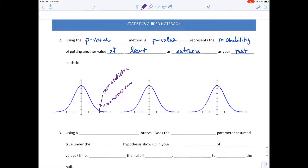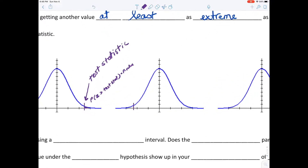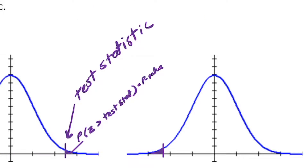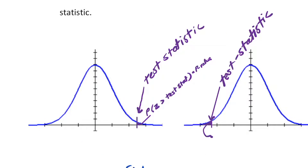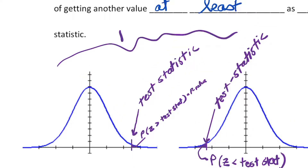On the less-than side, you'll get a test statistic over on the left. This small probability here would be the probability that you get something at least as extreme. The probability in here is the probability that z is less than your test statistic. These are for one-tailed tests.